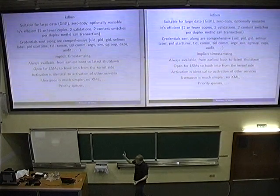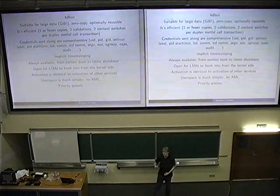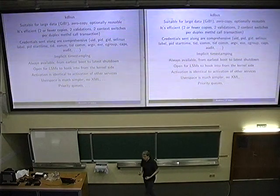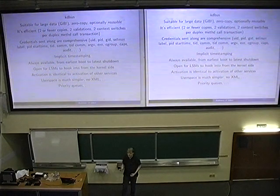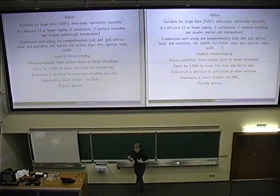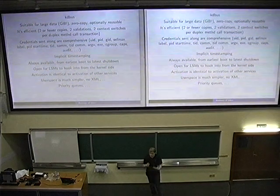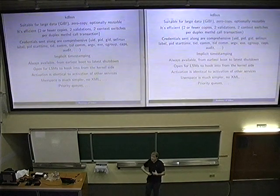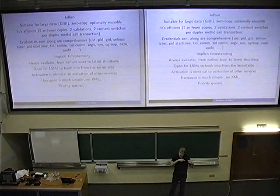KDBus is inherently not network transparent — it's about local IPC. However, the thing we put together here is that from the user space side, if you just use the libraries, you will not see much difference in detail between using KDBus, which is going to be really fast with a lot of things like identity information that don't make sense over the network, versus other transports.